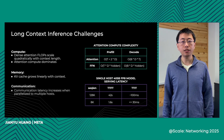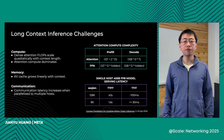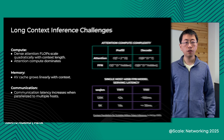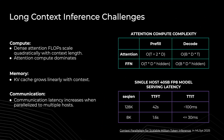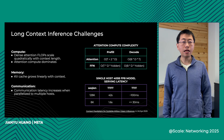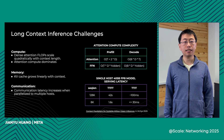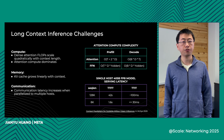There are unique challenges for long-context inference. For compute, dense attention FLOPs scale quadratically with context length, and attention dominates the overall compute time. For memory, the KV cache grows linearly with long context lengths. And for communication, latency increases when we partition across multiple GPUs or multiple hosts.